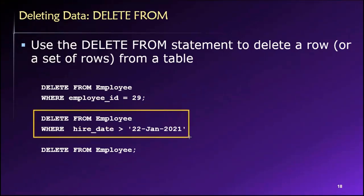Similarly, this example is saying: hey database, delete any rows in the employee table where the hire date is greater than the 22nd of January 2021. So if someone was hired on the 23rd of January 2021, or the 5th of March 2021, or the 21st of September 2022, all of those rows would be deleted.